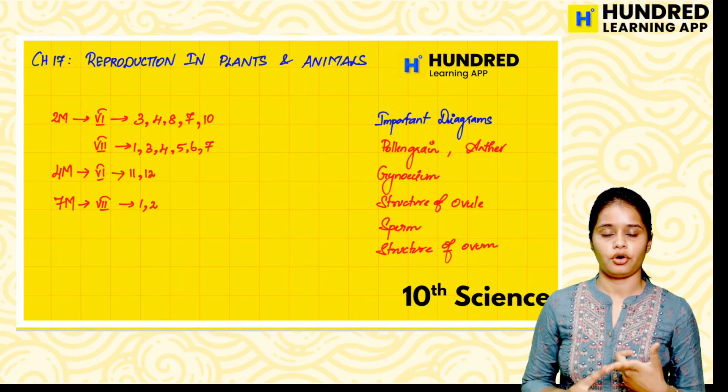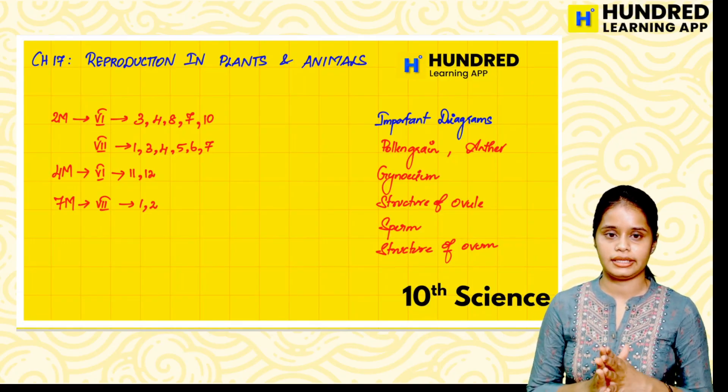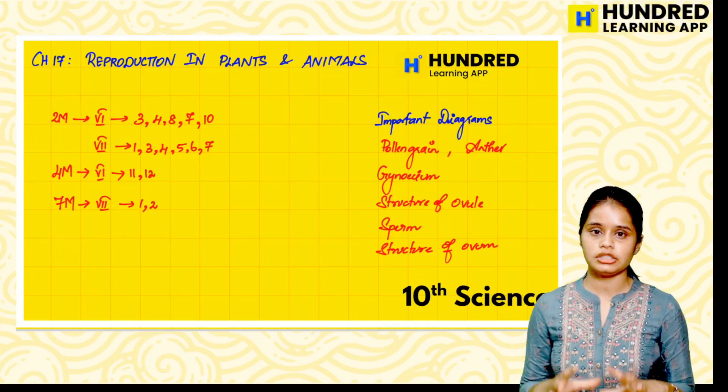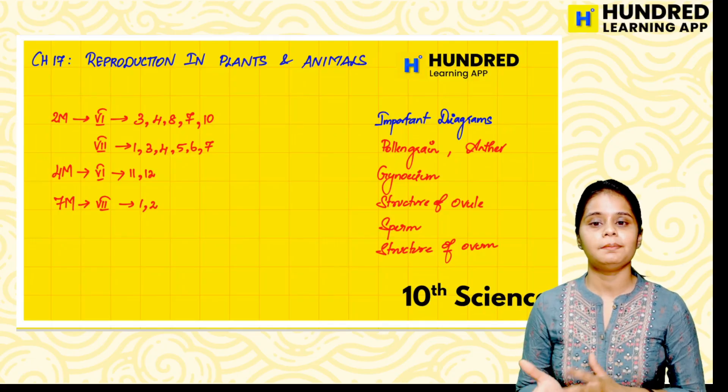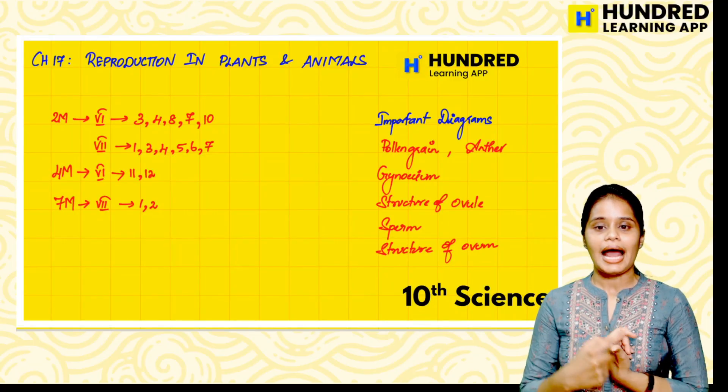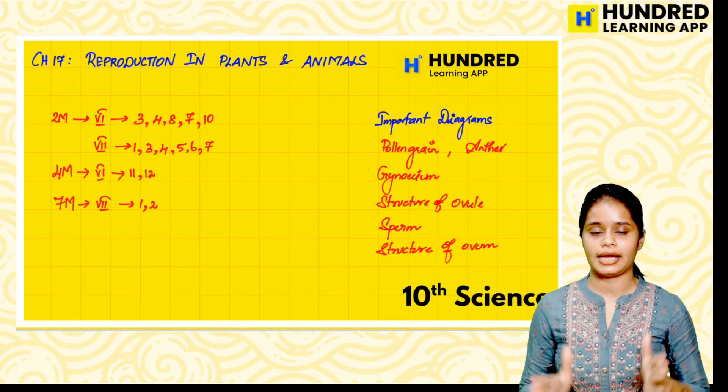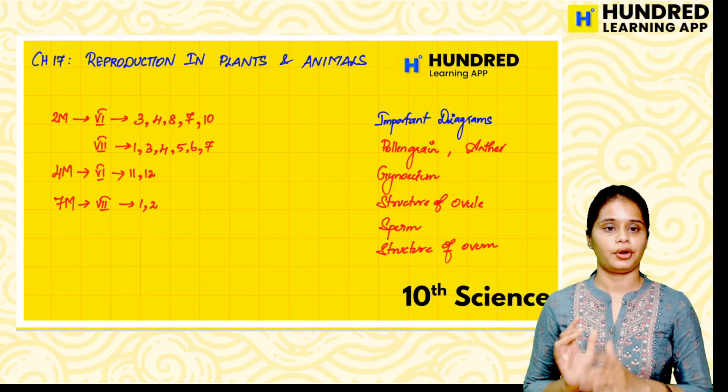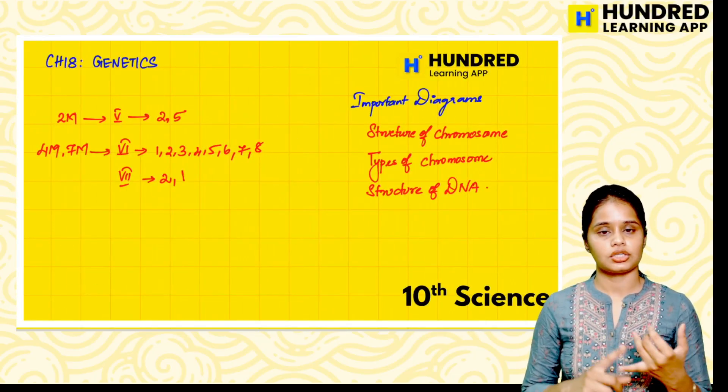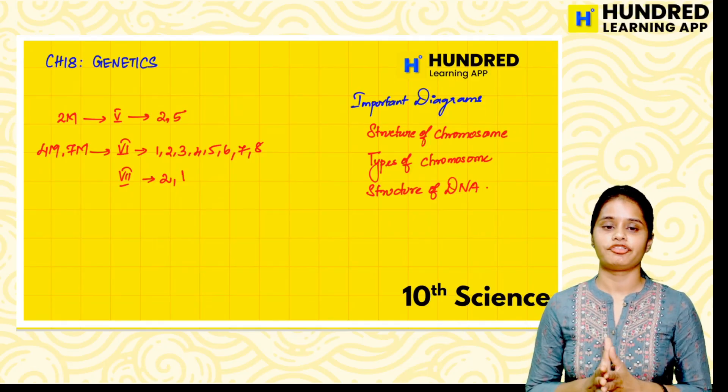And in the 17th chapter, Reproduction in plants and animals, there are some questions. At least in the questions also, first priority. And important diagrams - we have to learn Pollen grain, Ovule, Ovum, Sperm, Anther. These are very important. Gynoecium, these are very important diagrams. And in chapter 18, Structure of chromosome, Structure of DNA in detail, and types of chromosome.